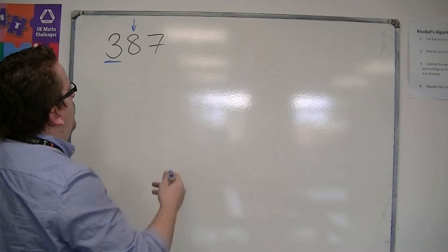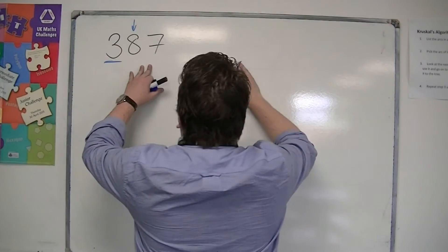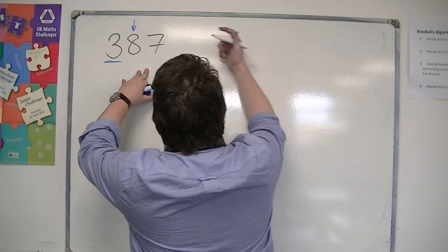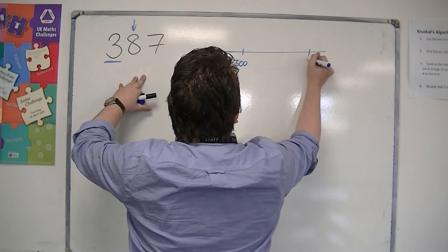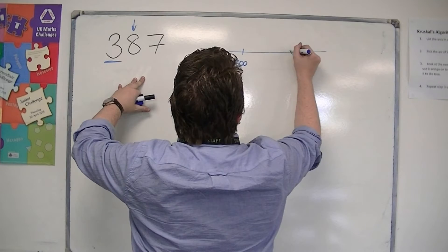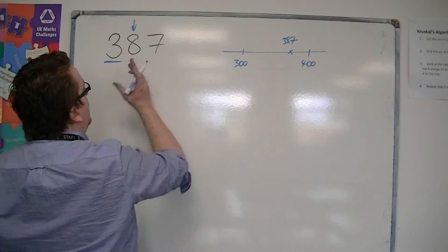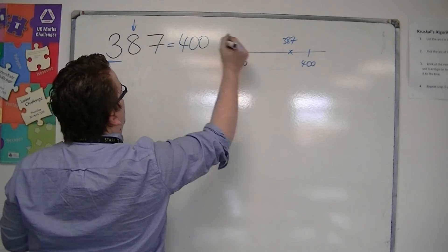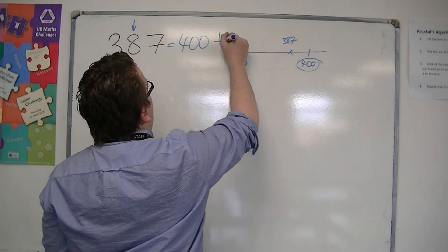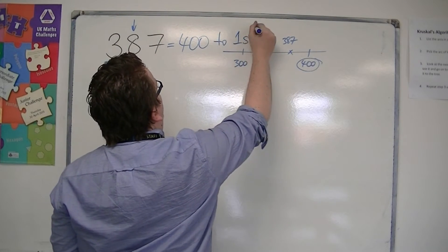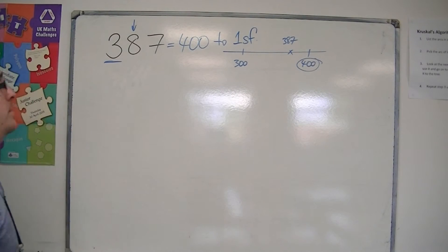The eight is five or more, so I round it up. I'm looking at: is 387 closer to 300 or 400? And 387 is over here, so because that eight tells you to round up, this is 400. And because we're rounding to one significant figure, we write 'to 1SF', rather than 'decimal places' or 'DP' from before.